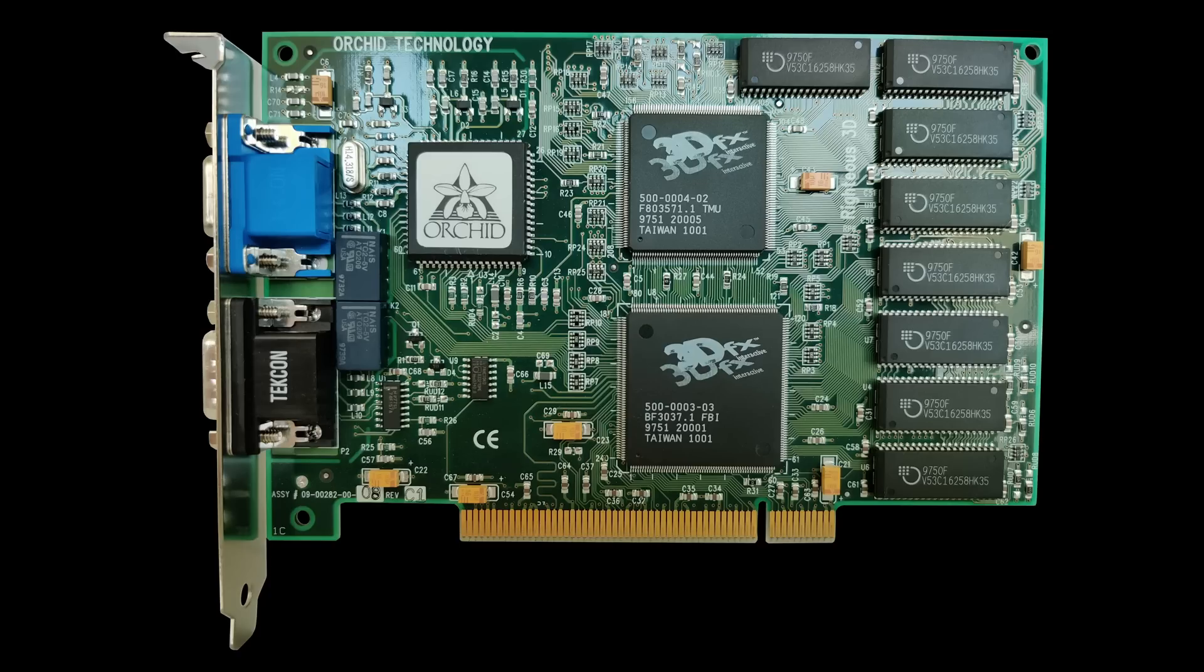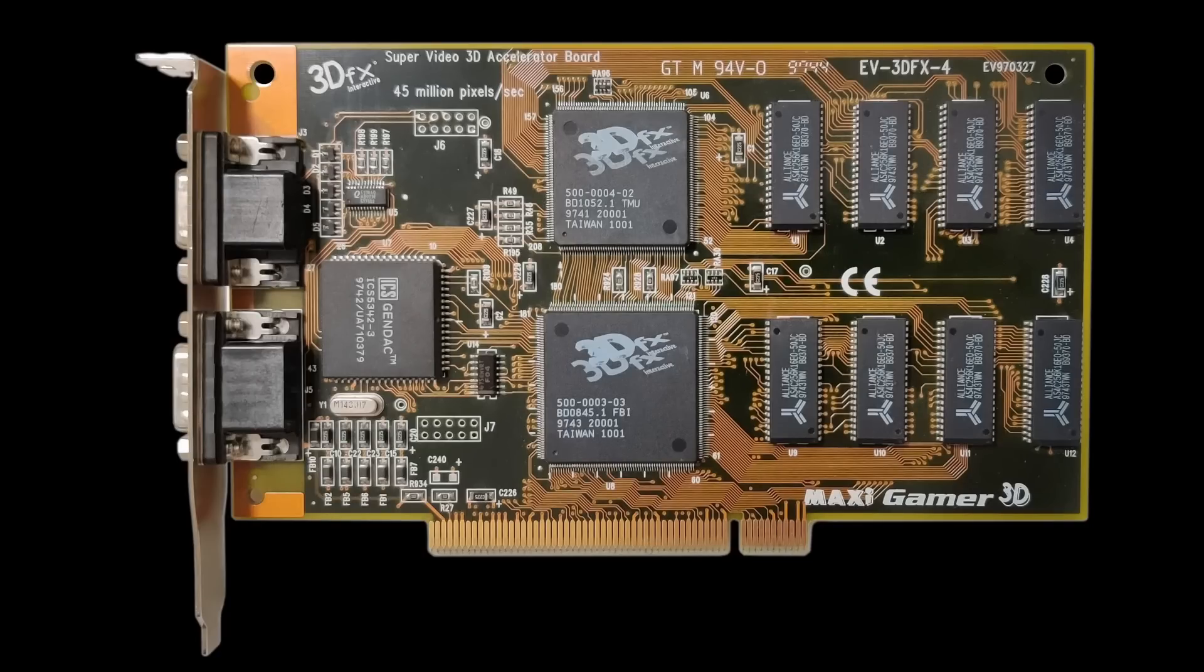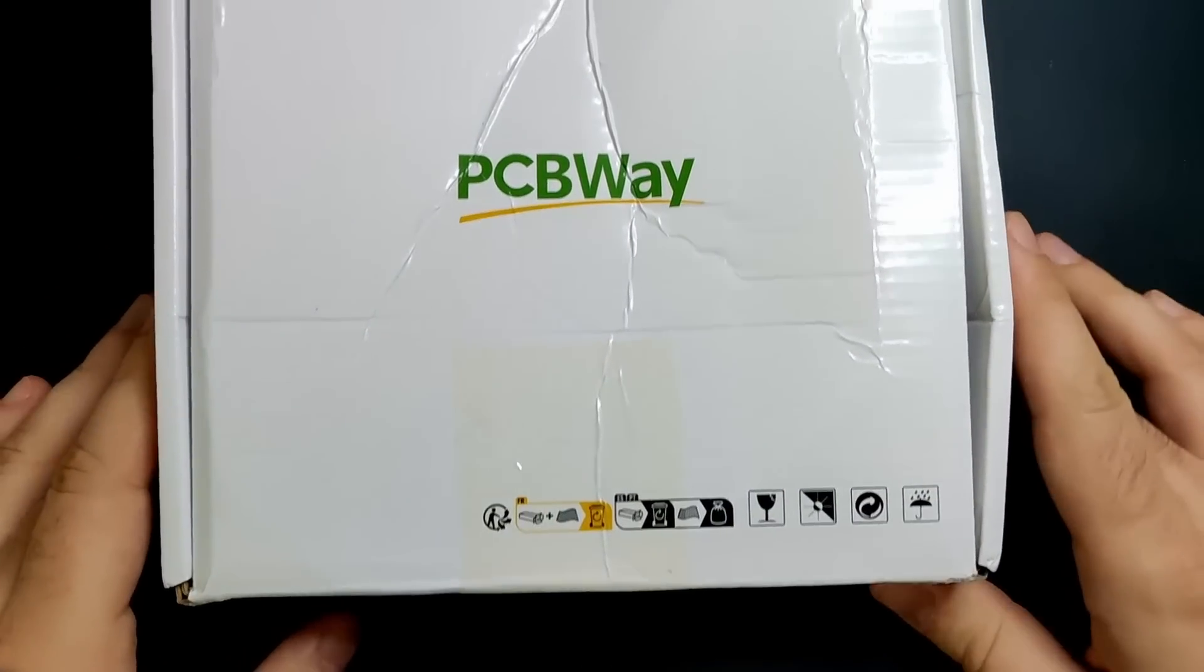So the MaxiGamer 3D is really the best card for this mod. Other cards that use the same layout will work too of course, but the memory chips have to be at the exact same location and there should be enough clearance around them. That's my doorbell. Let's check who is at the door. Isn't it nice that I can just cut out a few days of waiting for you?